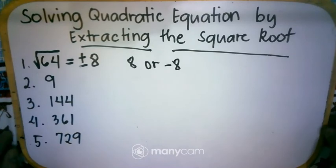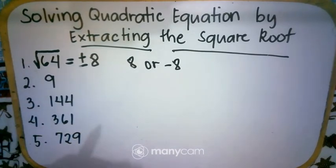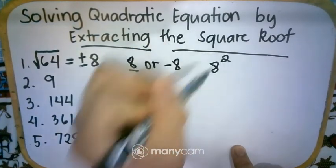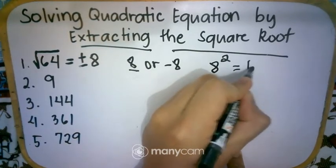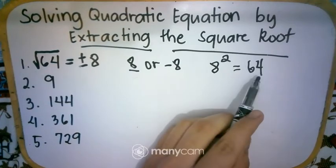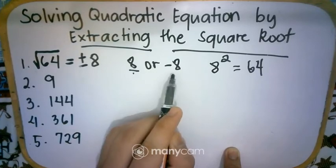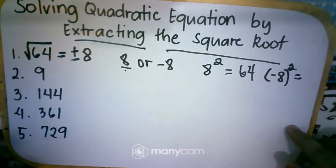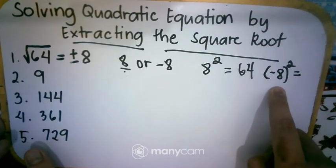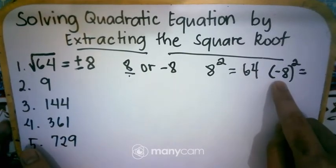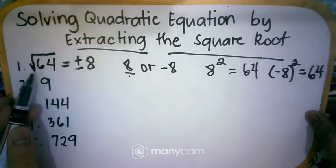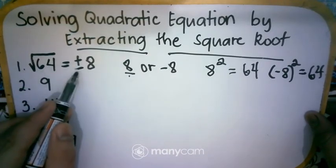Why do we have positive/negative 8? Let's reverse the concept: the opposite of square root is squaring. When we square 8: 8 times 8 equals 64. So the square root of 64 is 8. But also, negative 8 squared: negative 8 times negative 8 — since negative times negative is positive — equals positive 64. Therefore the square root of 64 must have both positive and negative answers: positive/negative 8.